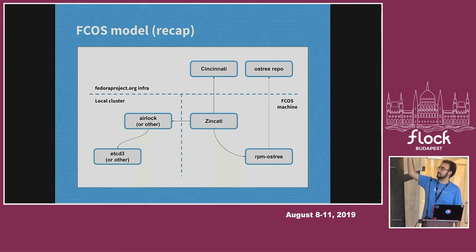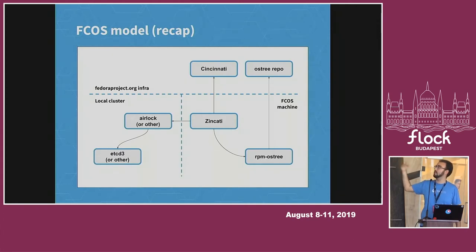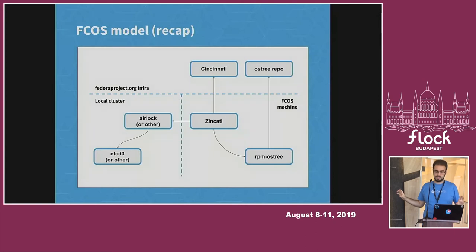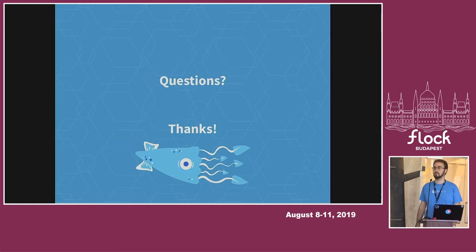That's the recap of what we just went through: the server side providing update hints via Cincinnati, the server side providing OSTree updates, the client side checking for update hints via Zincati, the client side downloading and applying those OSTree updates via rpm-ostree, and something in the cluster — airlock — taking care of reboot management across the whole fleet. We started a bit late, finished a bit late, so I can take a couple of questions maximum.